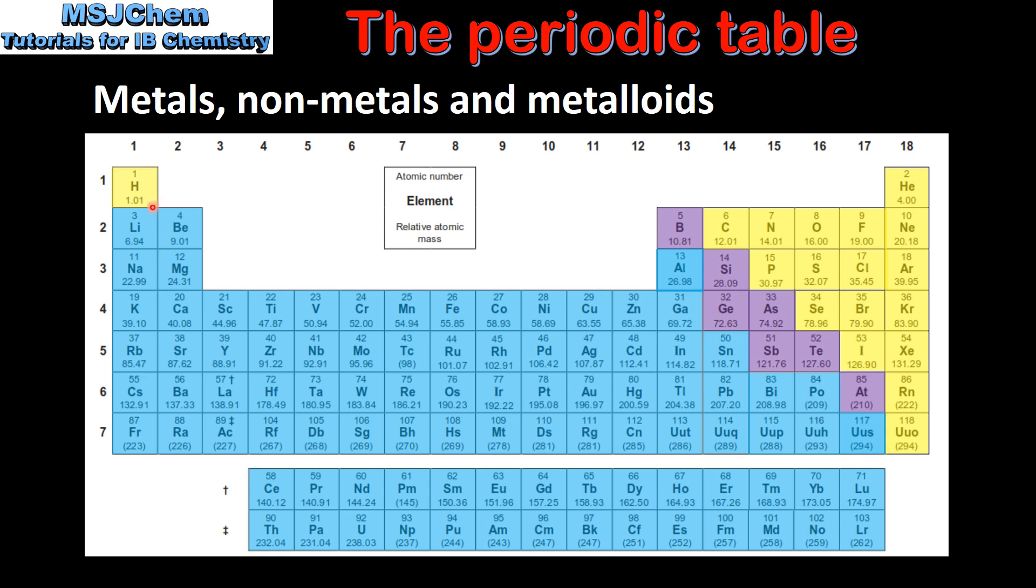The elements shaded in yellow are nonmetals. With the exception of hydrogen, the nonmetals can be found on the right side of the periodic table. The elements shaded in purple are the metalloids. These have properties intermediate between a metal and a nonmetal.